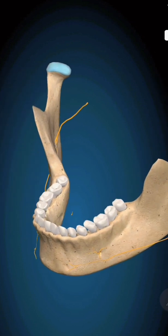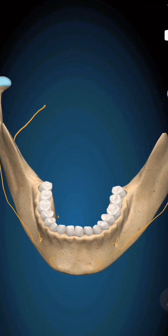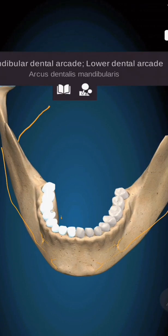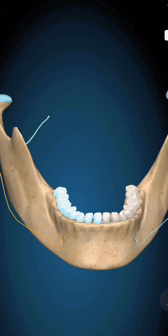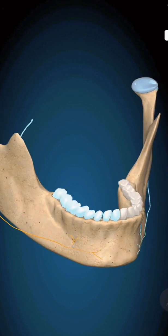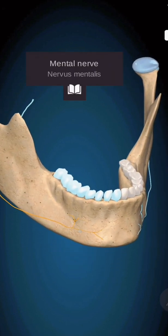The goal of the inferior alveolar nerve block is to anesthetize the lower teeth on the side being treated, as well as the lower lip and chin via the mental nerve.